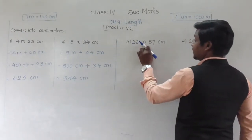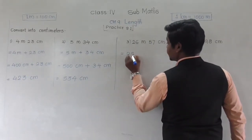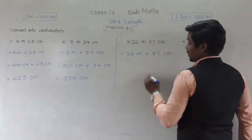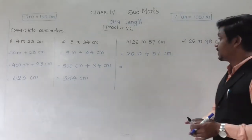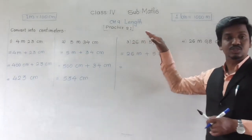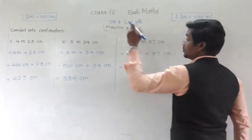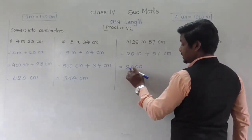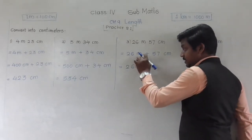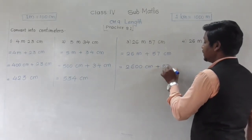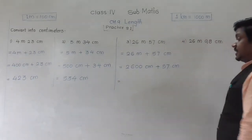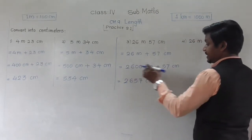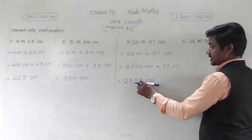Next: 26 meters 57 centimeters — this is also the same. 26 meters 57 centimeters means 26 meters plus 57 centimeters. The 57 centimeters stays as is. We convert 26 meters: 1 meter equals 100 centimeters, so 26 meters equals 2600 centimeters — that is 26 followed by two zeros. So 2600 centimeters plus 57 centimeters equals 2657 centimeters.